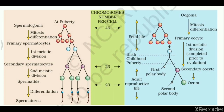At birth, a few of the primary oocytes are selected. The first meiotic division is completed prior to ovulation, converting the primary oocyte into a secondary oocyte. During this period, the female undergoes birth and childhood. At puberty, one of the primary oocytes undergoes meiotic division to form a secondary oocyte.